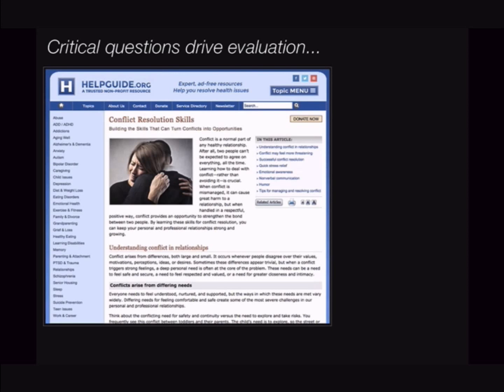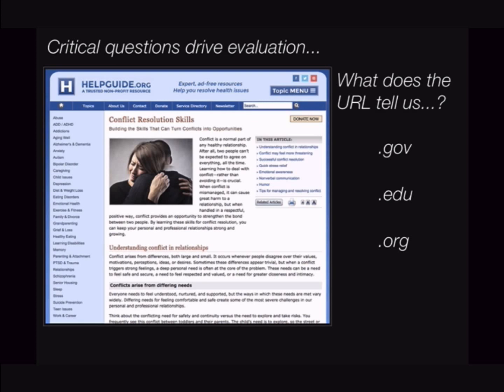Let's evaluate a site on conflict resolution skills as an example. The URL provides a good indication of the nature of the website. Depending on the type of information you require, sites associated with governments (.gov), colleges or universities (.edu), and possibly organizations (.org) can be more reliable or may have less bias than commercial sites, because they are often reviewed by scholars and professionals. Remember, .edu sites can also be K-12 schools with student productions, so always be aware of exactly what entity is producing the information.